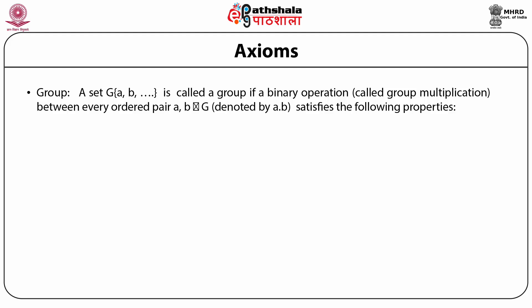The elements should satisfy the following properties. Number one: closure. If A and B are elements belonging to the set, then A·B — which is A multiplied by B in the sense of the binary operation defined in the group — also belongs to G for all elements A and B belonging to the group. This is the property of closure.